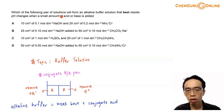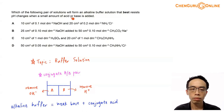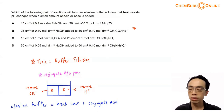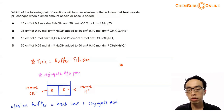Which of the following pair of solutions will form an alkaline buffer that best resists pH changes when a small amount of acid or base is added? With four permutations, we will need to discuss what the resultant solution is. The topic tested in this question is under ionic equilibrium, under buffer solution specifically, and we are interested in determining an alkaline buffer.